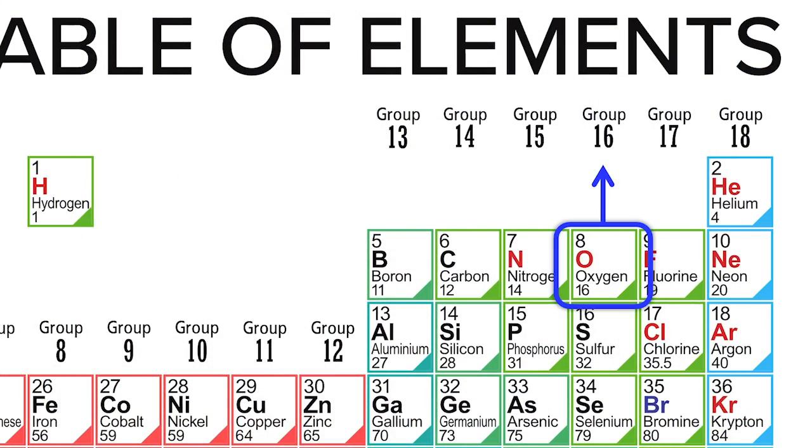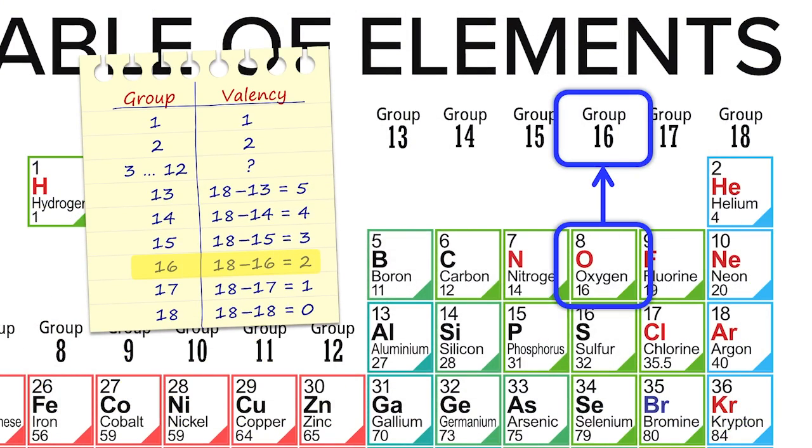Oxygen belongs to group 16, so its valency is 18 minus 16, equals to 2.